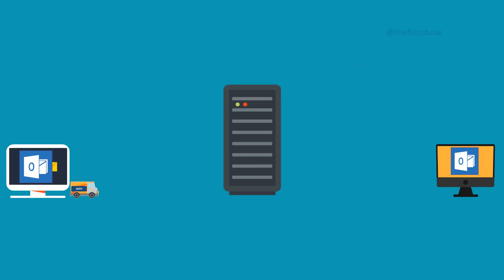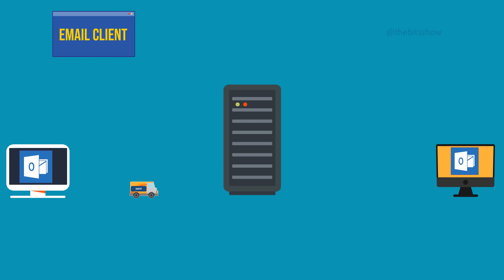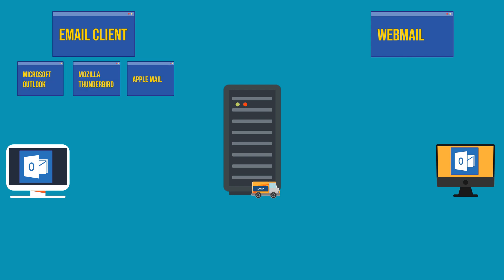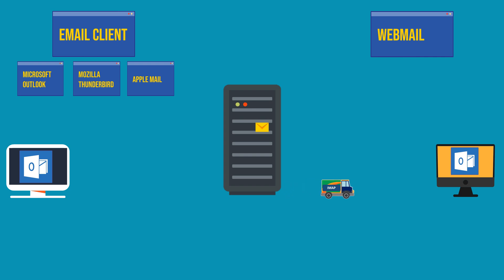Emails can be accessed and managed in two primary ways: through a mail client — also known as an email client or email application — or via webmail, which are web-based email services accessed through a web browser. A mail client is a software application installed on your computer or mobile device. Examples include Microsoft Outlook, Mozilla Thunderbird, and Apple Mail. To access your emails through a mail client, you configure it using protocols like POP3 or IMAP for incoming emails and SMTP for outgoing emails. Mail clients offer features like offline access, extensive organization options, and rules for sorting emails, allowing you to manage multiple email accounts within a single interface.